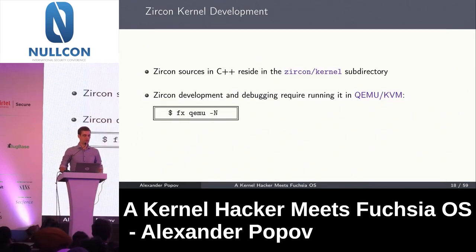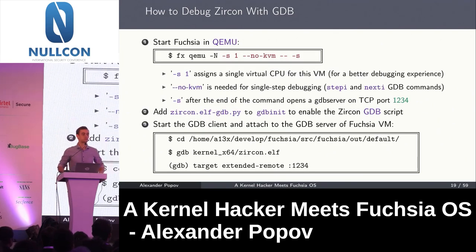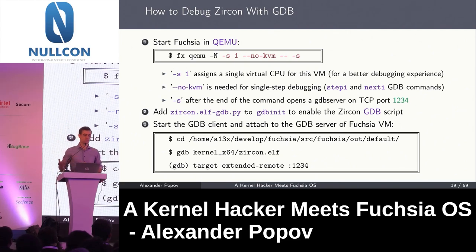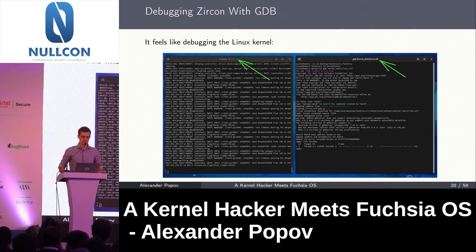Now about the Zircon microkernel. It is written in C++ and is part of Fuchsia's source code. To develop this microkernel, you run the system in QEMU with KVM. Debugging it is very similar to the experience of debugging the Linux kernel. You start QEMU with a single virtual CPU for better debugging experience. For single stepping, I usually disable KVM hardware virtualization, because otherwise on every single step the debugger gets into the timer interrupt handler. Then I just attach the GDB client to the GDB server.